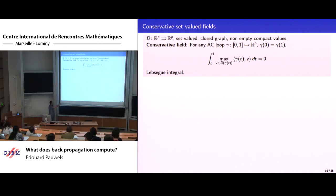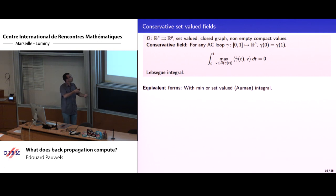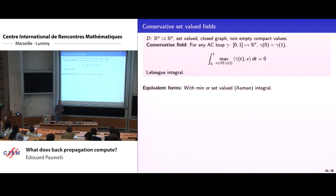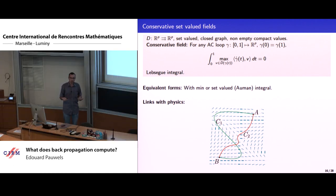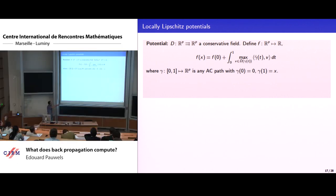The same definition holds with mean in place of max, and this corresponds to reversing time. If you remember physics, this zero-circulation property is what defines potentials of conservative forces. Given a conservative field D, I can define a function f associated to it: the value of f at x is f(0) plus the integral of the circulation along an absolutely continuous path starting at zero and finishing at x. The conservativity assumption ensures this integral does not depend on the path chosen.